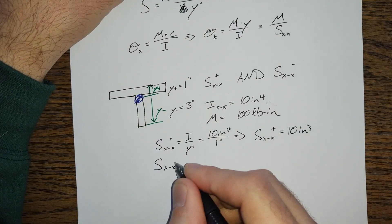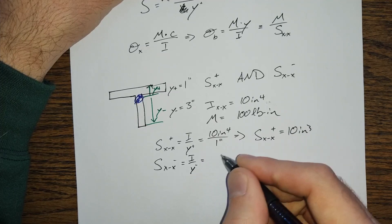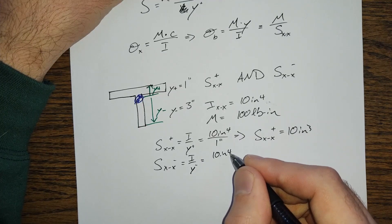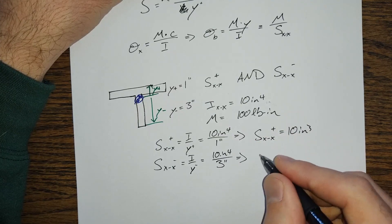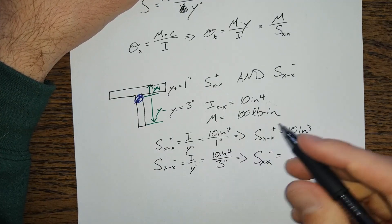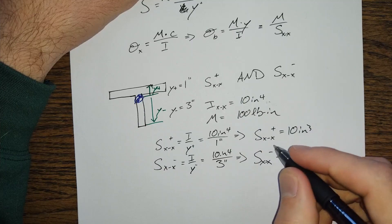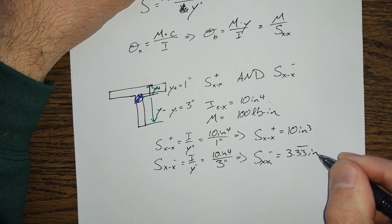Similarly, SXX minus is equal to I over Y minus, 10 inches to the fourth. I could have picked rounder numbers, but that's all right. SXX minus is equal to 3.33 repeating inches cubed, right?